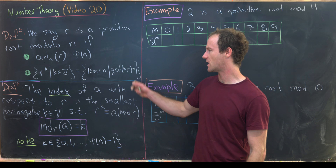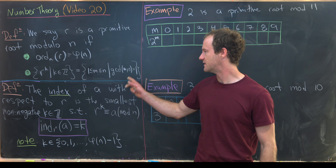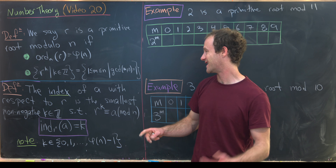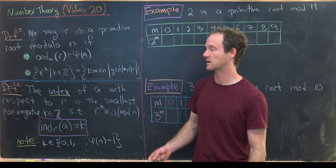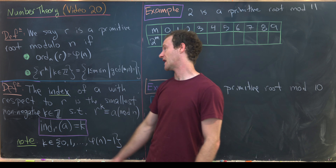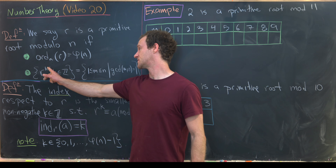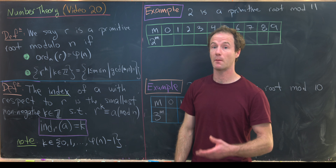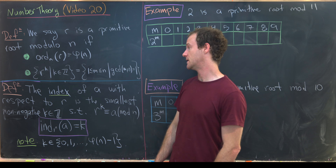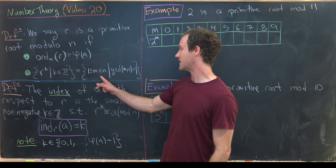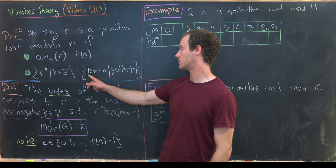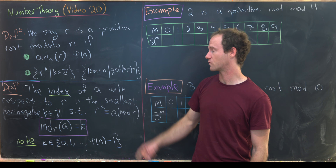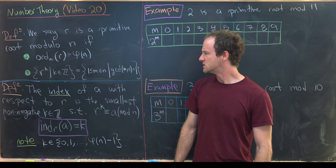That's equivalent to the following statement — all happening mod n. That is, r to the k, as k runs through all the integers mod n, produces exactly the set of numbers between 1 and n that are relatively prime to n.